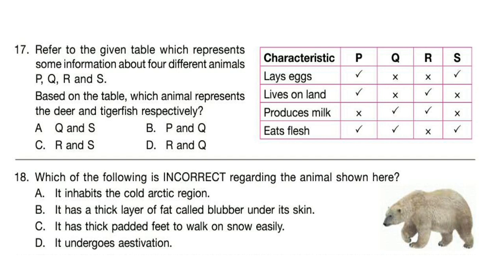Question 18: Which of the following is incorrect regarding the animal shown here? Read the options carefully and try to find out the incorrect one. Correct answer is option D — it undergoes estivation. The animal shown is a polar bear, and it undergoes hibernation, not estivation.